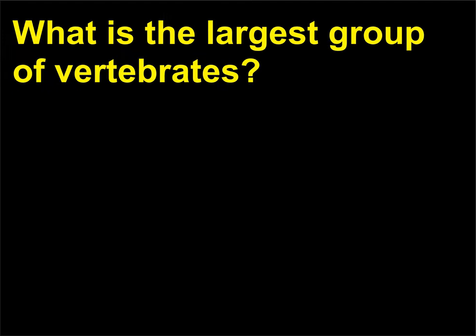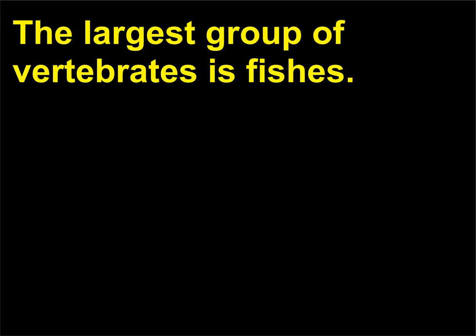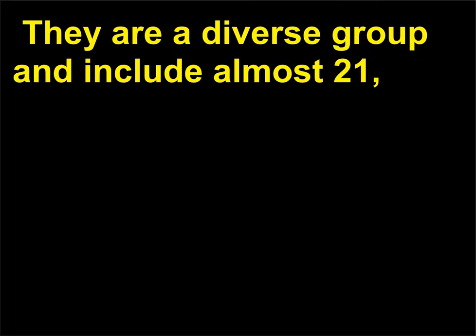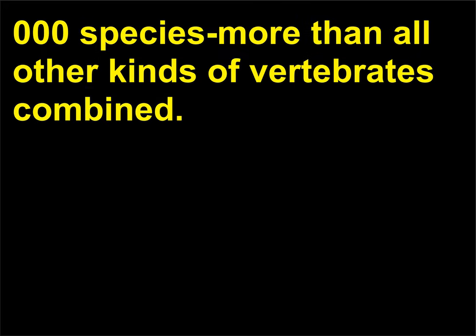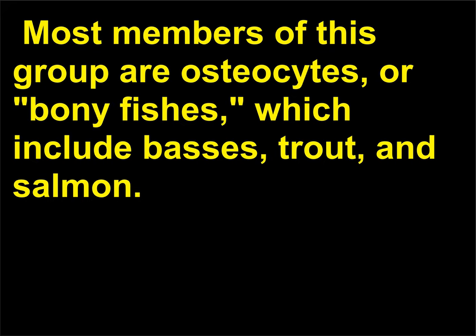What is the largest group of vertebrates? The largest group of vertebrates is fishes. They are a diverse group and include almost 21,000 species — more than all other kinds of vertebrates combined. Most members of this group are osteichthyes, or bony fishes, which include bass, trout, and salmon.